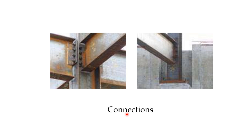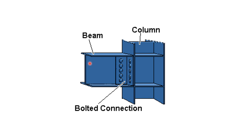A beam connects to a column; two beams connect to one column; beam connects to column again. You can see the modeling in software showing beam, column, and bolted connections. We can also design steel structures in software — there are a lot of software packages available in the market.